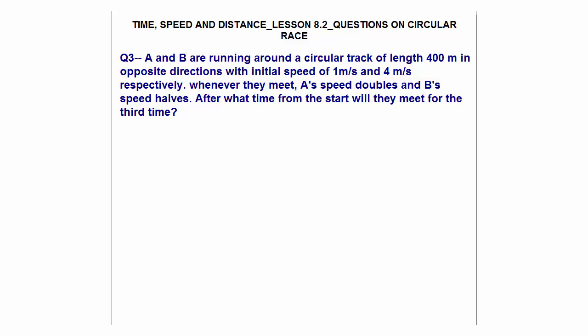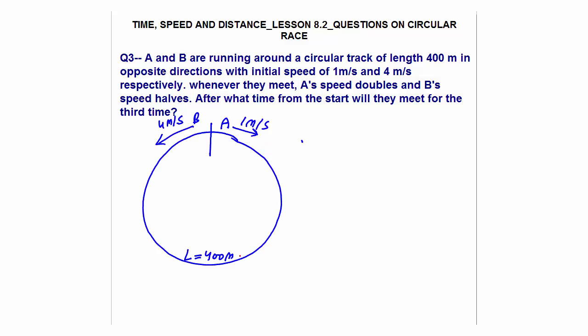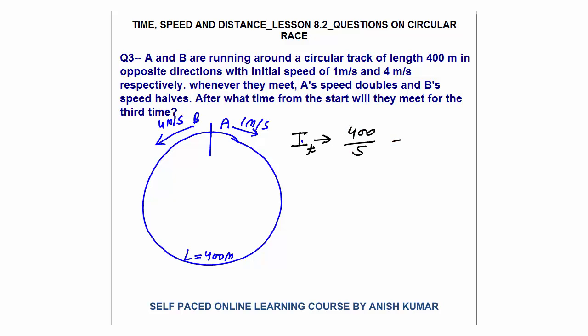Question three: A and B are running around a circular track of length 400 meters in opposite direction, with speeds of 1 and 4 meters per second respectively. Whenever they meet, A doubles his speed and B's speed halves. After what time from the start will they meet for the third time? For the first meeting, the relative speed is 5, and the distance to reduce is 400 meters. So the first meeting takes place after 400/5 = 80 seconds.